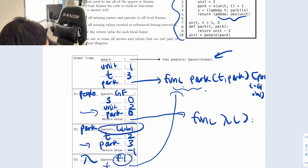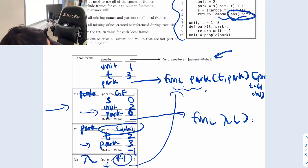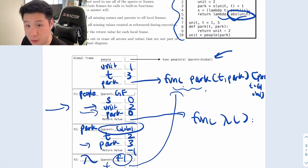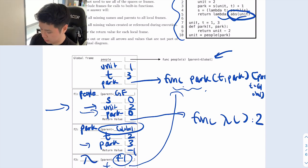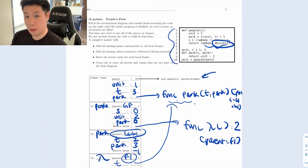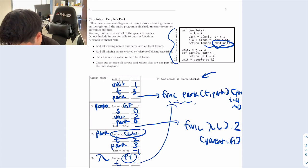The last line returns lambda: abs(unit). This lambda takes no parameters and returns the absolute value of unit. Unit is defined in the current people frame as 2. The absolute value of 2 is 2, so the return value of the people frame is a function (this lambda) that would return 2.